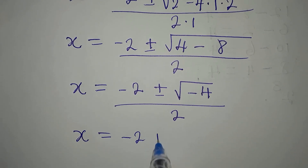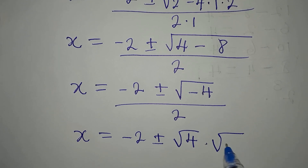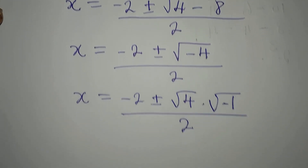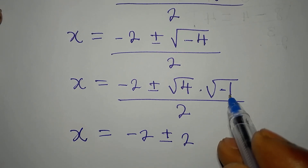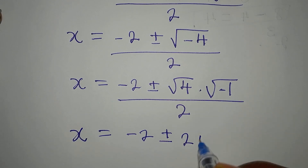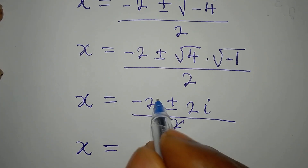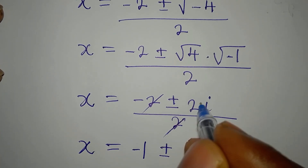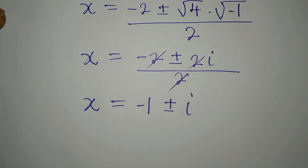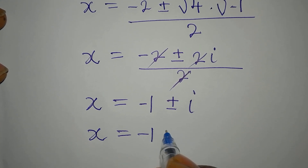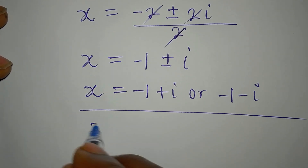Now x equals negative 2 plus or minus the square root of negative 4 over 2. We factor out negative 1 from under the radical: the square root of 4 is 2, and the square root of negative 1 is i. So x equals (negative 2 plus or minus 2i) over 2, which simplifies to x equals negative 1 plus or minus i.